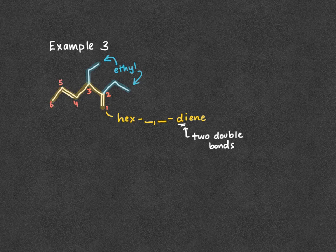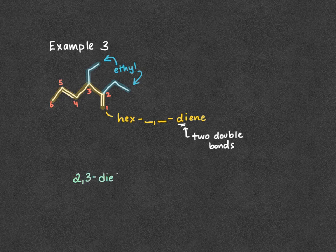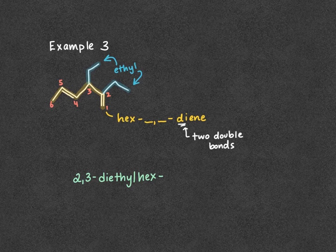Now that everything is numbered, I can put it all together. We have two ethyl groups, so that gives us 2,3-diethyl. Then hex-, and my double bonds are on carbons 1 and 4, so the full name is 2,3-diethyl-hex-1,4-diene.